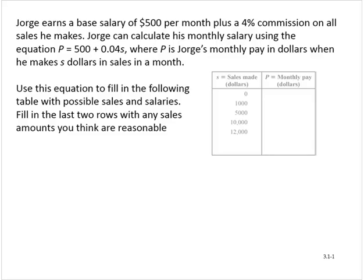George earns a base salary of $500 per month, plus a 4% commission on all sales he makes. George can calculate his monthly salary using the equation p is equal to 500 plus 0.04s, where p is George's monthly pay in dollars when he makes s dollars in sales in a month.